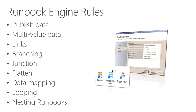Another concept is data mapping. Data mapping lets you transform existing published data items or variables into new values according to rules you specify. For example, if you want to convert numeric values to word values, you can use the map published data activity to do that.